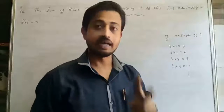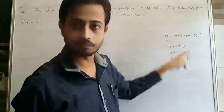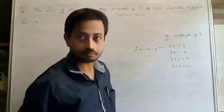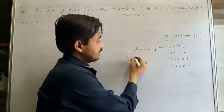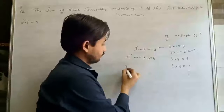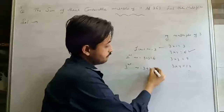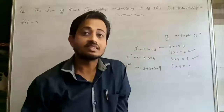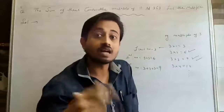If the first consecutive multiple of 11 is X, then the second is X+11 and the third is X+11+11 = X+22. For example, if a multiple of 3 starts at 9, the next ones are 12 and 15. Similarly here: the three consecutive multiples of 11 are X, X+11, and X+22.